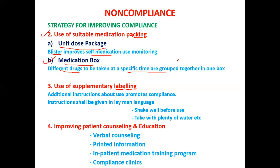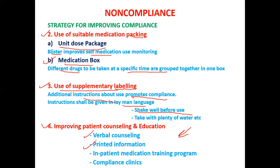The use of supplementary labeling is also important — additional instructions about use promote patient compliance. The pharmacist should properly educate and counsel the patient regarding their medication in their local or vernacular language. Examples of proper labeling include 'shake well before use' for suspensions or 'take with plenty of water.' Patient counseling and education is the main responsibility of the pharmacist — through verbal consultation, written information, or in-patient medication training programs. Compliance clinics should be opened at specific communities to make patients aware of their medication.